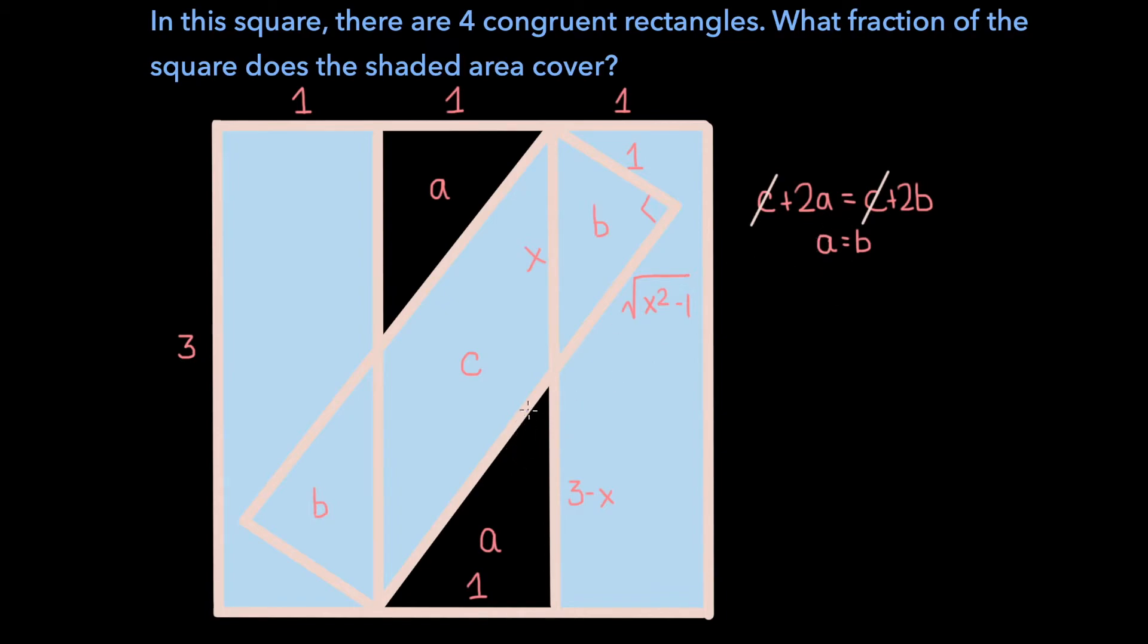A, which is the area of this triangle, is 1 times 3 minus x over 2. And B, which is the area of this triangle, is 1 times the square root of x squared minus 1 over 2. Now the coefficients of 1 half cancel, and we're left with 3 minus x is equal to the square root of x squared minus 1.